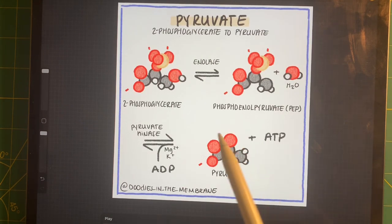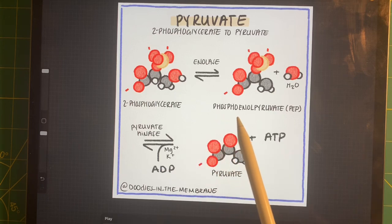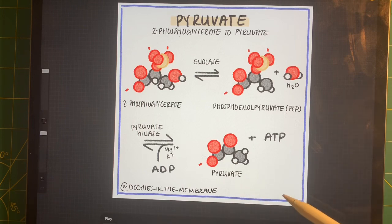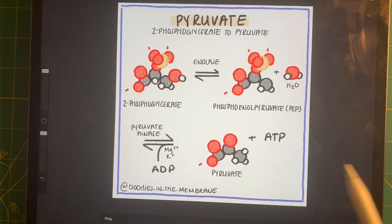When we reacted phosphoenolpyruvate with pyruvate kinase, we formed pyruvate. Pyruvate is the final product of glycolysis. So let's start talking about what happens next.